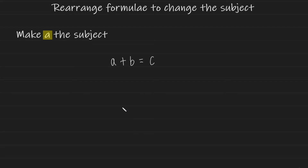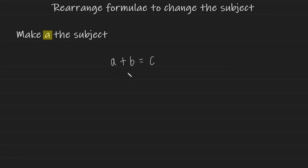Let's take a look at the first example. The question would like us to make a the subject. We have an equation: a plus b equals c. In order to make a the subject, all it means is you have to isolate the a and get it on its own on one side of the equation. Since it's on the left hand side, I'm going to keep it on the left hand side. So what's being attached to this a?